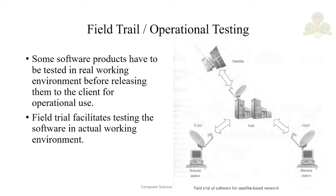The next type is field trial or operational testing. Some software products have to be tested in the real working environment before releasing them to the client. Field trial is similar to beta testing but is normally conducted on customized software. For example, if an organization has developed a messaging software that works over a satellite network, during development it would have been tested in a lab by simulating the satellite network. Before releasing it to users, a field trial is conducted by installing the software on the actual satellite network and testing through a group of selected users.